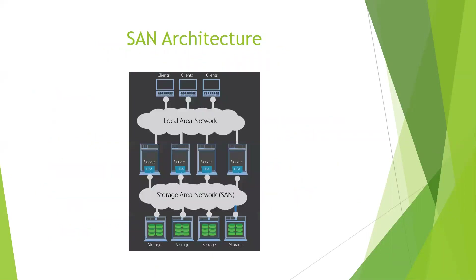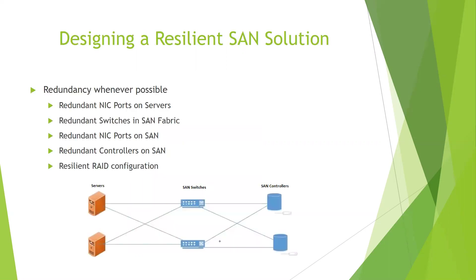Here's a quick look at basic SAN architecture. This example has multiple storage units and servers. You have your clients connected into the normal local area network, which is connected into servers. Those servers are connected into a separate storage area network, which then connects into the actual SAN storage device itself. You need those server front ends for clients to access the SAN, and the SAN is on a totally separate network.